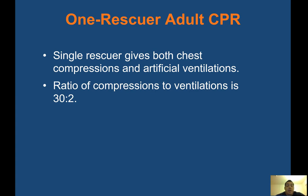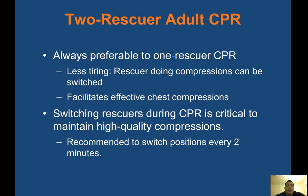One-rescuer adult CPR: a single rescuer gives both chest compressions and artificial ventilations at a ratio of 30 compressions to 2 ventilations. Two-rescuer CPR is always preferable — it's less tiring and facilitates effective chest compressions. Switch rescuers every two minutes, as fatigue reduces compression quality. Switching is critical to maintaining high-quality compressions.